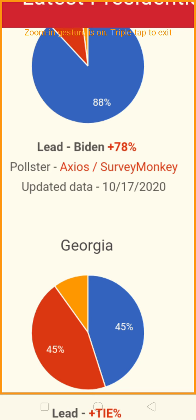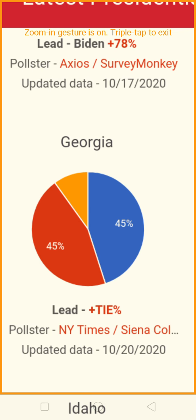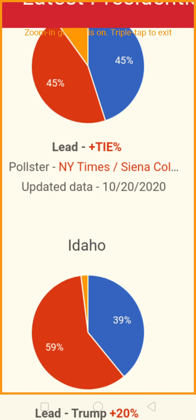Georgia has Biden in a statistical tie with Trump — 45% to 45%. Large margin of error. So that is a tie. It says T-I-E. Georgia is a tie. Let's look at Idaho.